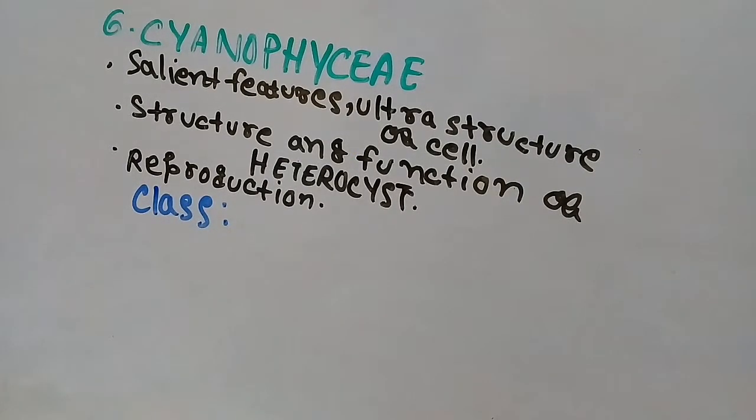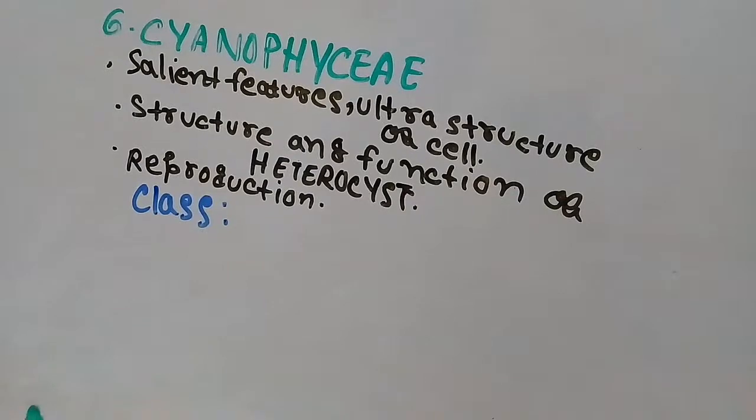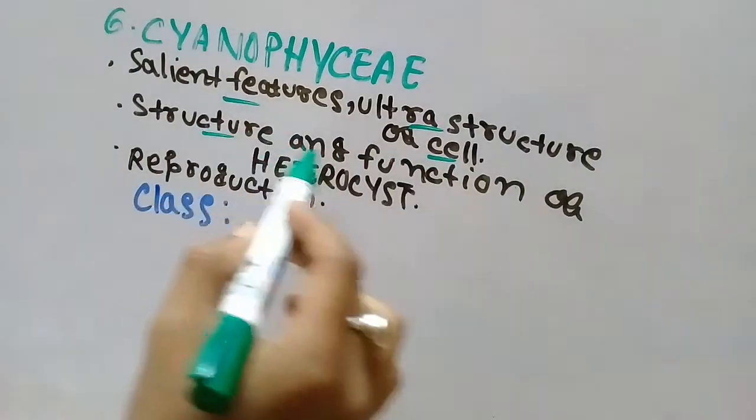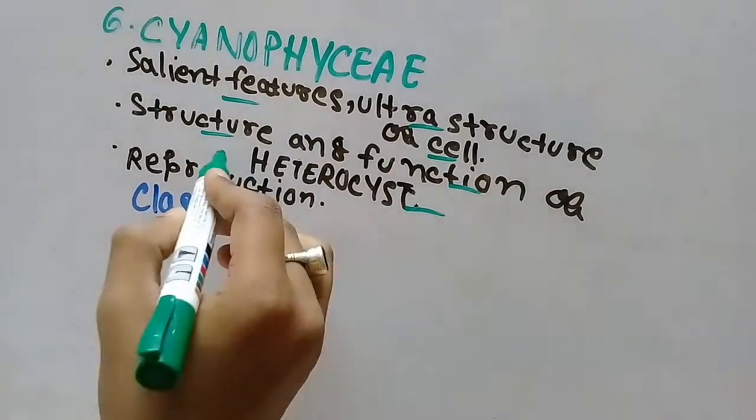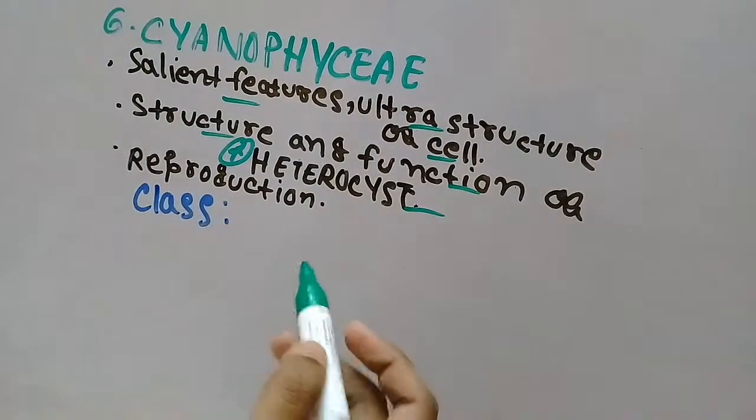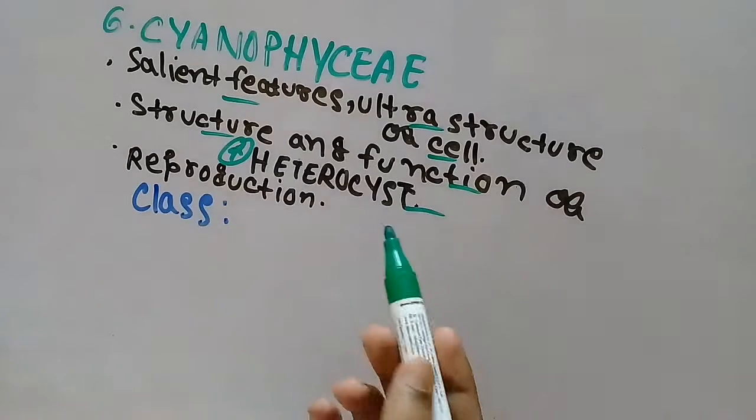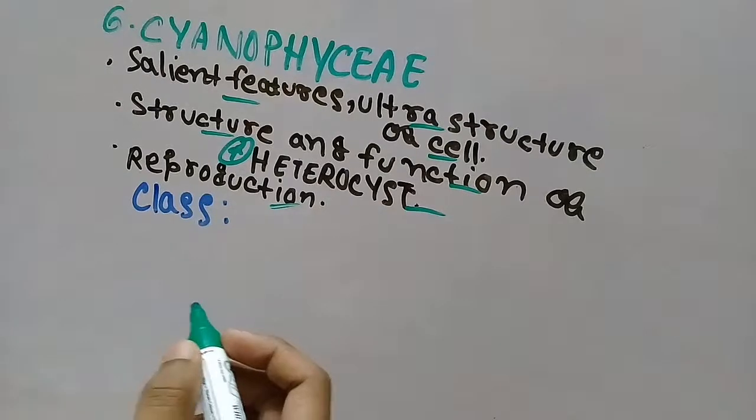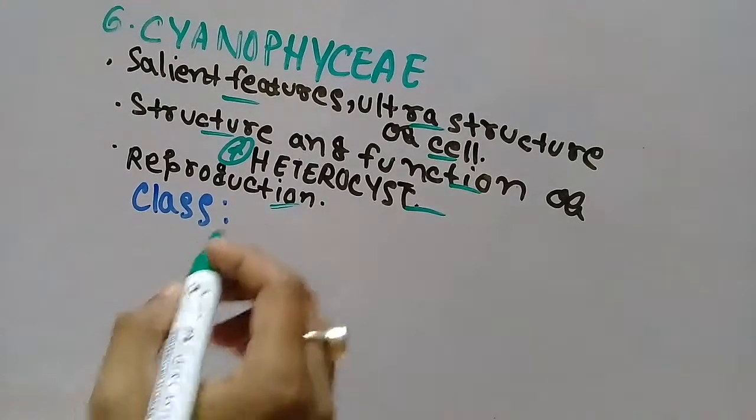The important part in Cyanophyceae and the things that are needed to study are the salient features, ultrastructure of cell, the structure and function of heterocyst. This is the most important part - heterocyst, the structure and functions are often asked in exams. The reproduction part of Cyanophyceae is also important.